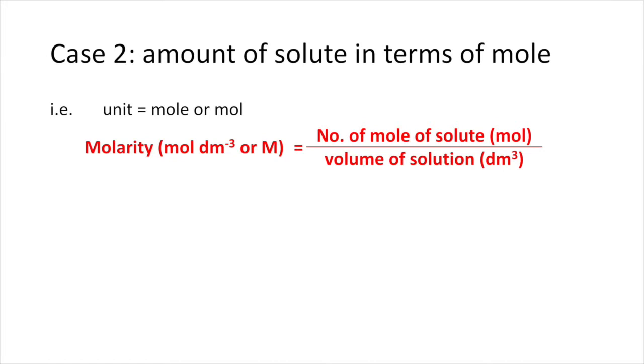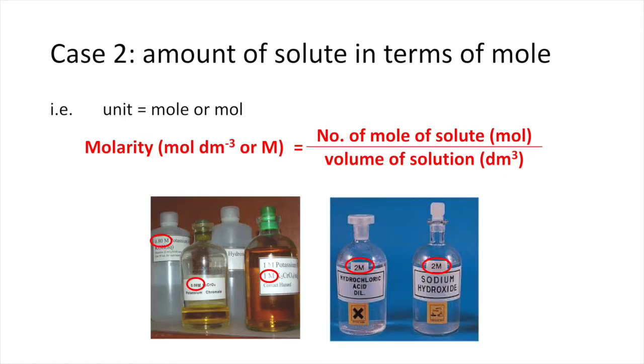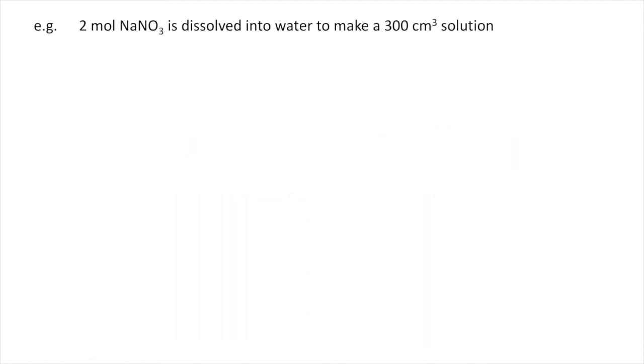Sometimes, we use capital letter M to represent. And that's why you see the concentration marked in the reagent bottle like this picture. Now, for example, find the molarity of a solution for 2 moles of sodium nitrate dissolved in water to make a 300 cm cubed solution.